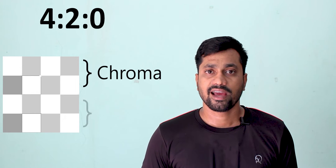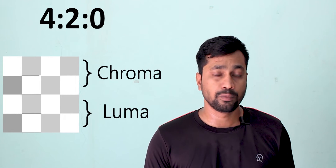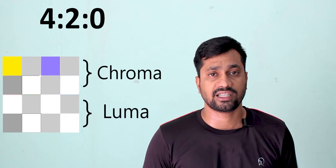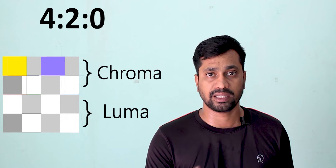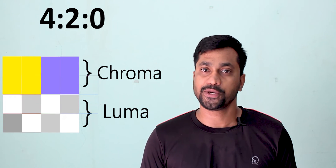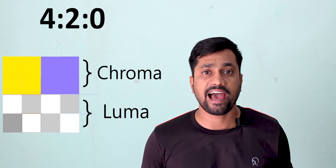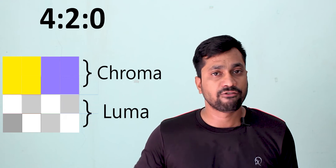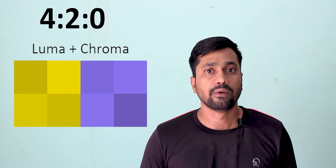Moving on to 4:2:0 — the first number four is the same, representing pixel block count. The second number two means two pixel blocks share the same colors, same as before. But the third number zero means there is no color schema on the second row of pixel blocks — they must share color from the top row. So in 4:2:0 we have only two unique pixel colors compared to eight in 4:4:4. A lot of changes happened, so 4:2:0 is lossy compression and we lose many pixel colors and clarity.